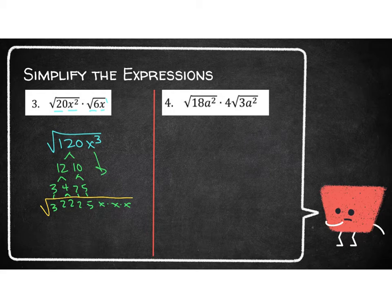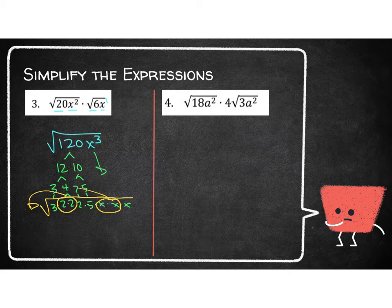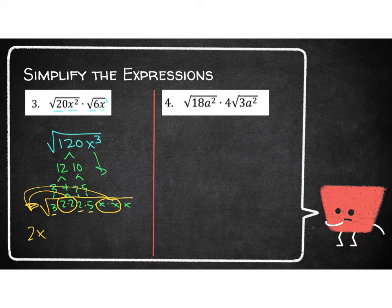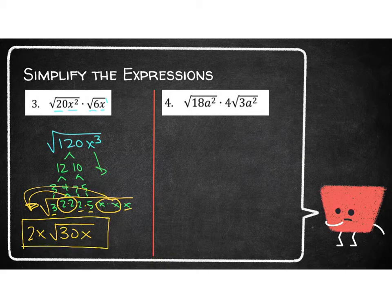My whole radicand is the list of all the factors underneath, all being multiplied together. The only pairs I see are a pair of 2s and a pair of xs. So 2s can come out and xs can come out — I have a 2 and an x on the outside. Inside, I have 3 times 2 times 5, which is 30, and an x left over. So the answer is 2x square root of 30x.